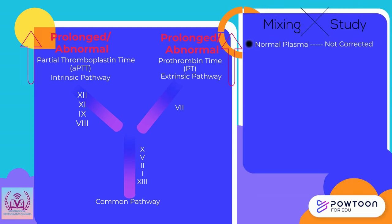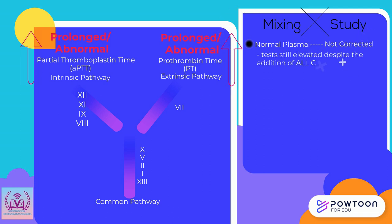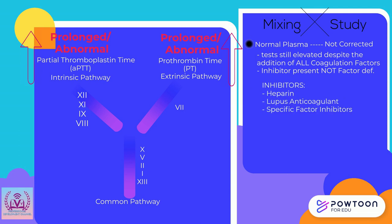For our last example, a patient's PT and aPTT are both abnormal, and after the mixing study, fresh plasma was not able to correct the tests. Since the test remains elevated despite the addition of fresh plasma — which contains all coagulation factors — this suggests that an inhibitor is present in the sample, responsible for the prolonged test, rather than a coagulation factor deficiency.